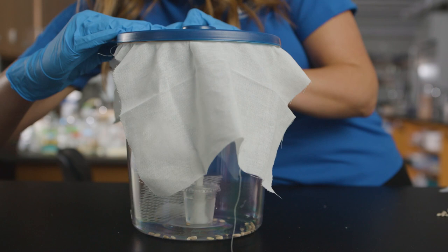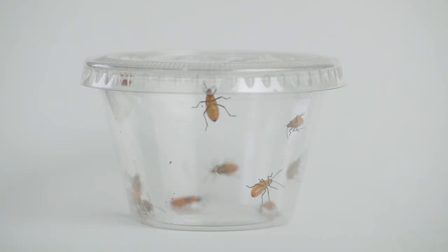The culture can be maintained at room temperature out of direct sunlight. Insects in the order Hemiptera emerge from their eggs as smaller versions of adults, called nymphs.